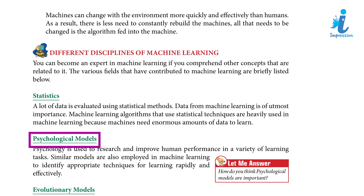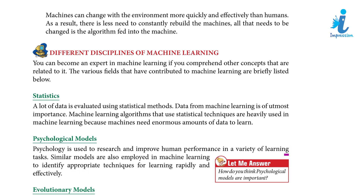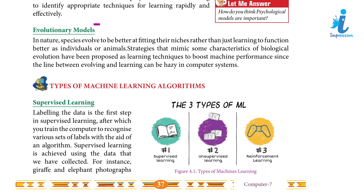Psychological models: Psychology is used to research and improve human performance in a variety of learning tasks. Similar models are also employed in machine learning to identify appropriate techniques for learning rapidly and effectively. How do you think psychological models are important?